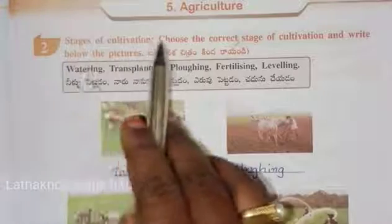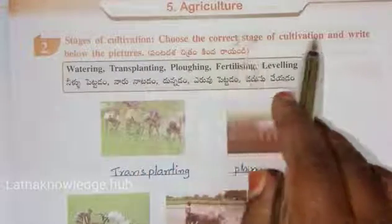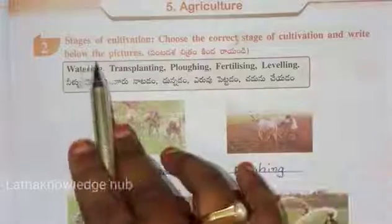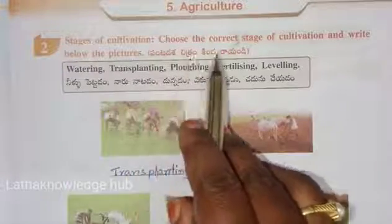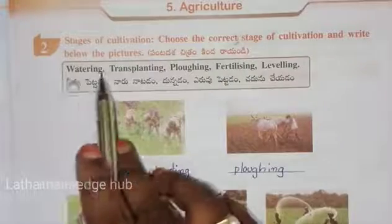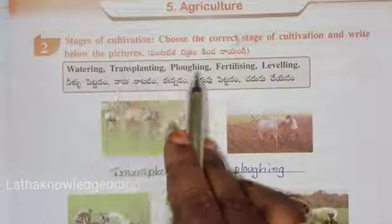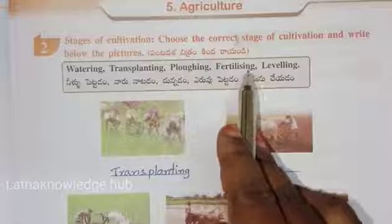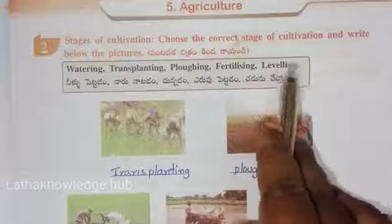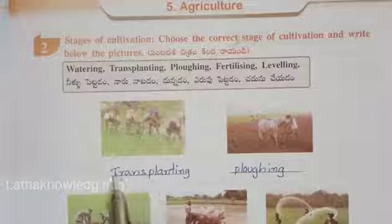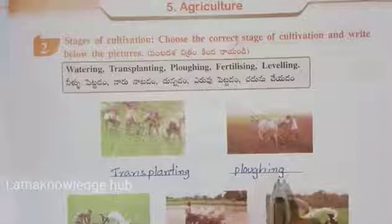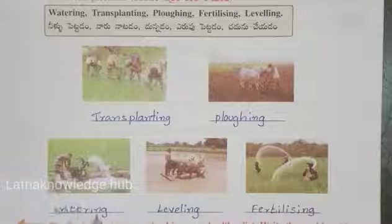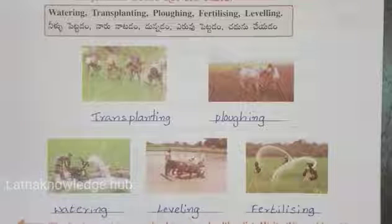Stages of cultivation: choose the correct stage of cultivation and write below the picture. The stages shown are: watering, transplanting, plucking, fertilizing, and leveling. This one is transplanting, and this one is plucking, watering, leveling, and fertilizing.